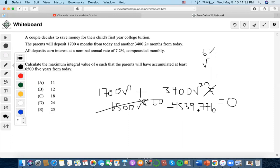I'm going to set V to the N equals X. So I'm going to do 3400X squared because it's V to the 2N, plus 1700X minus 4539.776.